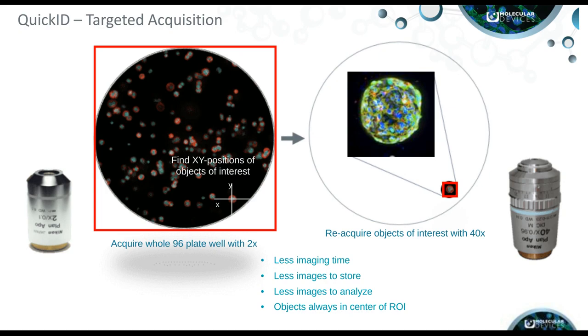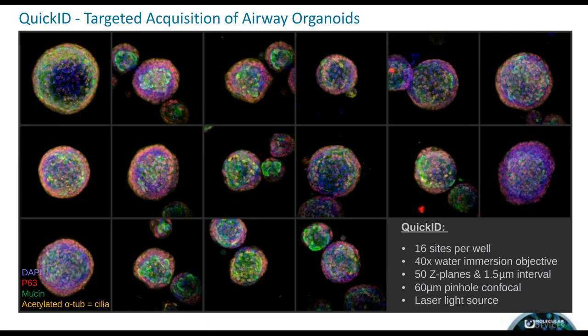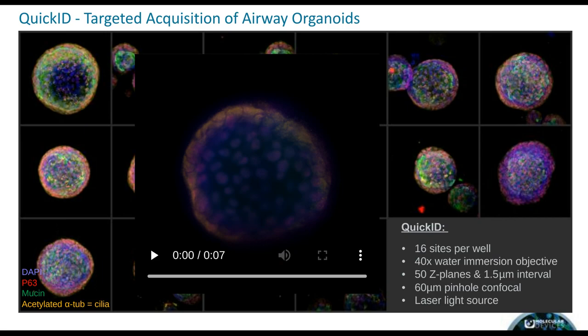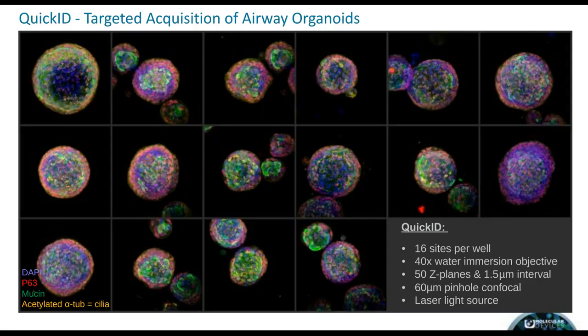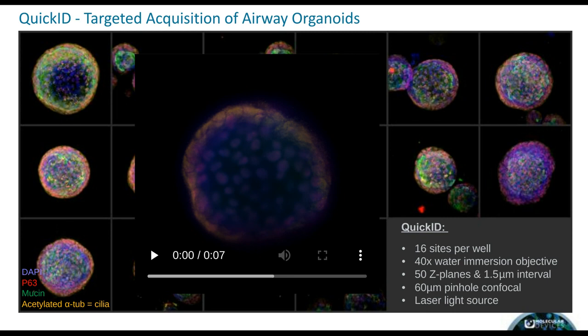The second round of acquisition focuses only on the objects of interest whose coordinates were saved. This saves a lot of imaging time compared to acquiring everything at high magnification. It also reduces the number of images to store and the time to analyze. The instrument was able to automatically detect airway organoids per well and come back to those positions of interest, acquiring them with a 40X water immersion objective in 3D with a custom number of Z planes, a custom interval, and a user-defined confocal disk with a laser light source.